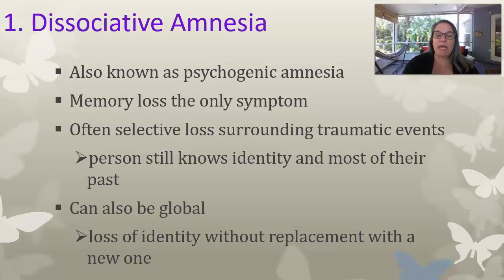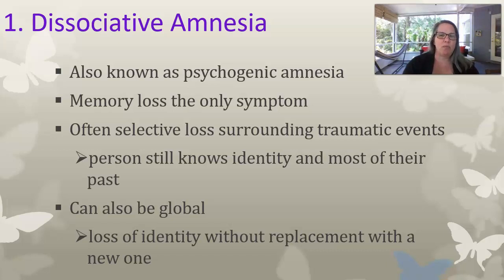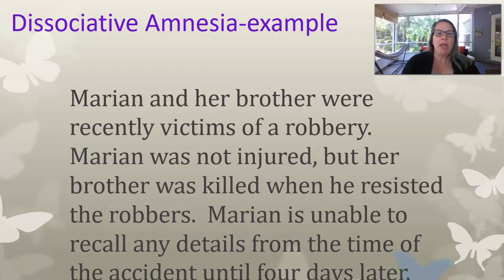It can also be global amnesia, where they lose their identity without replacement of a new one. So this is someone who wakes up one morning and just doesn't remember who they are — doesn't remember their name, their job, their friends, their family, their house. That's the very extreme version. Here's an example: Marion and her brother were recently victims of a robbery. Marion was not injured, but her brother was killed when he resisted the robbers. Marion is unable to recall any details from the time of the accident until four days later — that is the brain's way of protecting you from that traumatic memory.